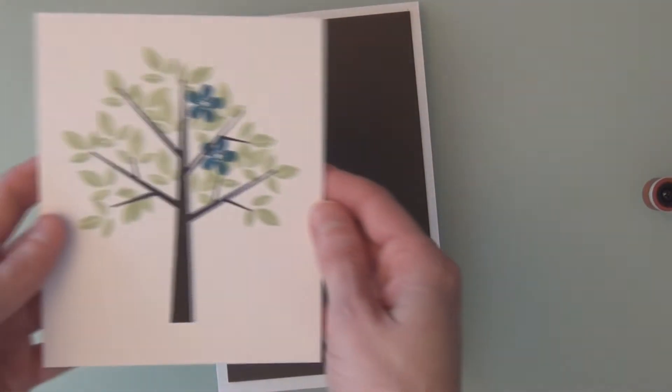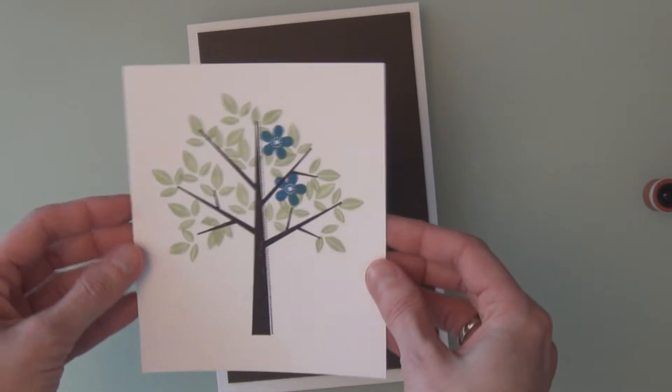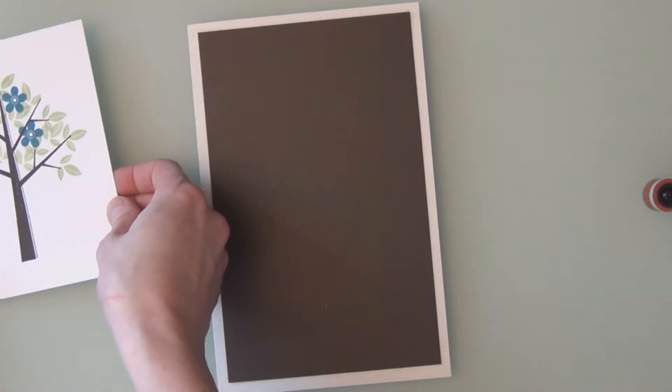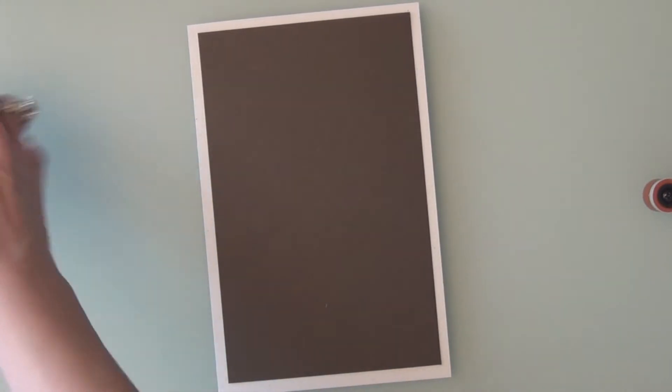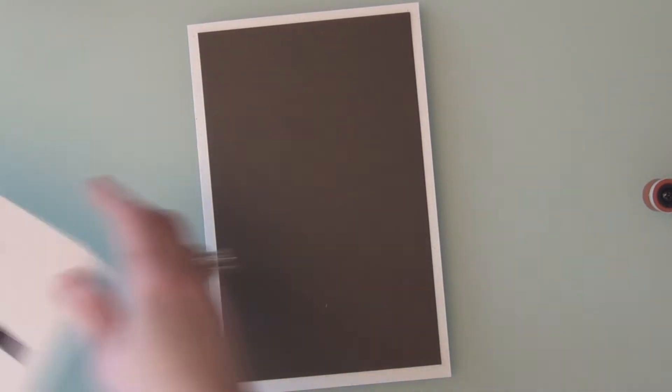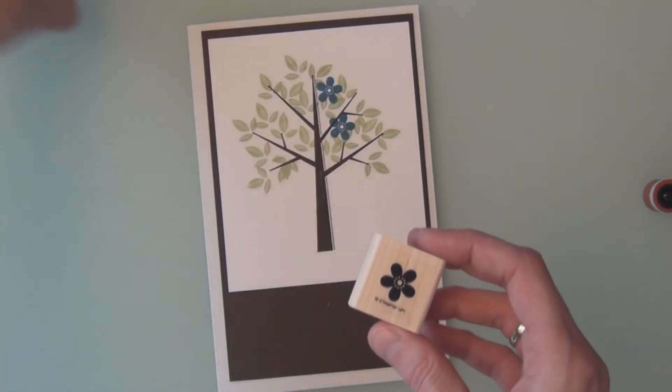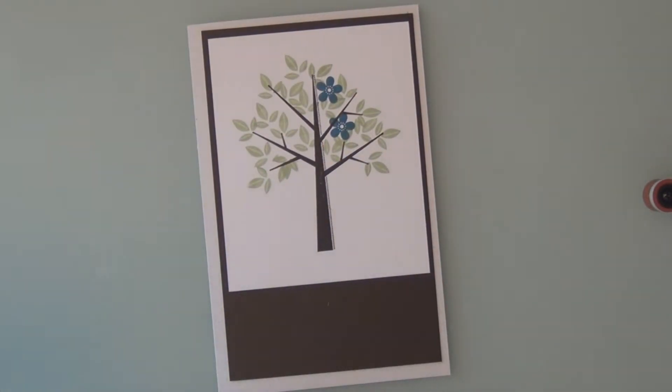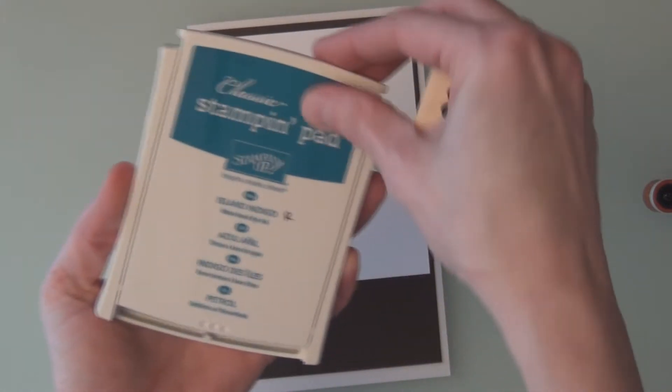I went ahead and pre-stamped my image. I suspect no one wants to see me do that again. And this is about 5 3⁄4 by 4 3⁄4. And this time I'm bringing in the flower stamp. I've already done a couple. I'm just going to throw in some more. I'm using Island Indigo by Stampin' Up.